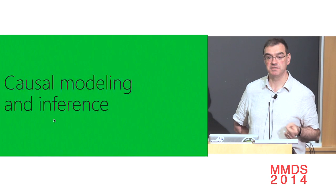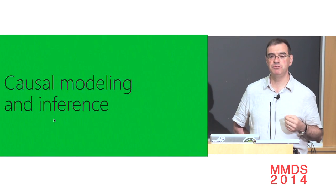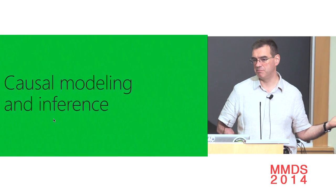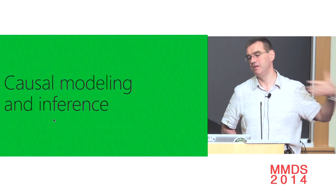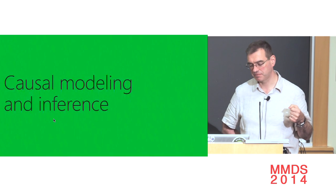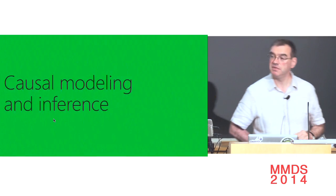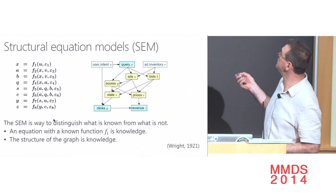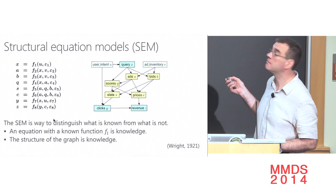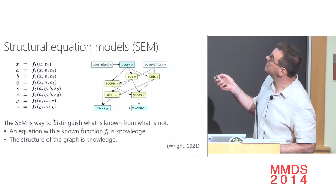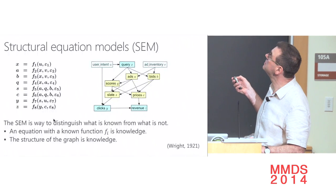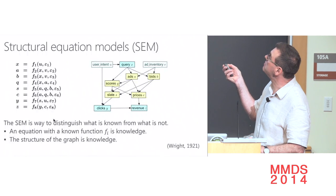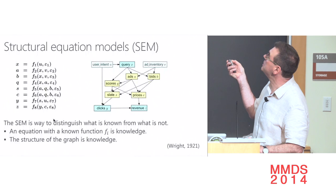Causal modeling and inference: the reason we do this is because looking at correlations in data causes problems, and we'd like to go faster than A/B testing and use data collected in the past to make useful predictions. What we're going to do is a spreadsheet — as everybody knows, the spreadsheet was invented at least in 1921. In the ads example: you have user intent, queries, ad inventory, and code in yellow that selects bids, computes scores, decides which set of ads to show, decides prices, and the user might click.